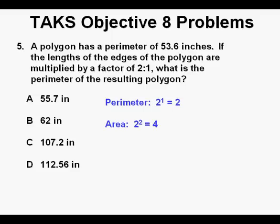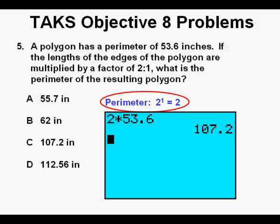For area it would be 2 to the power of 2, which equals 4. And for volume it would be 2 to the power of 3, which would equal 8. In this one, perimeter for length is what applies. And 2 times 53.6 equals 107.2. And that is found here. And we circle our answer C.